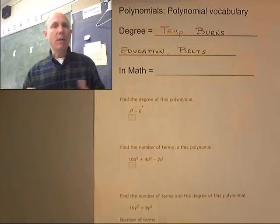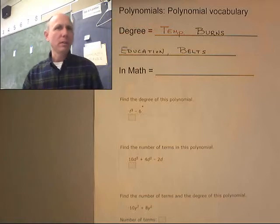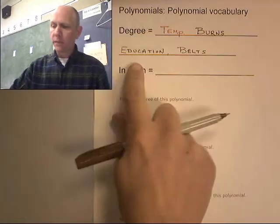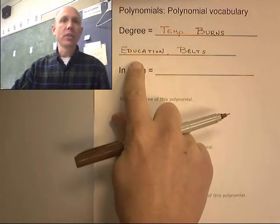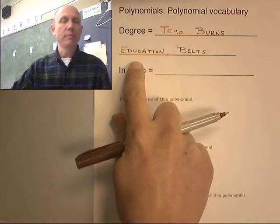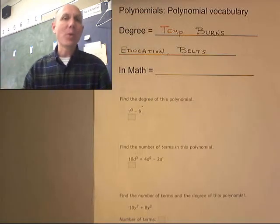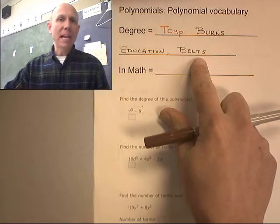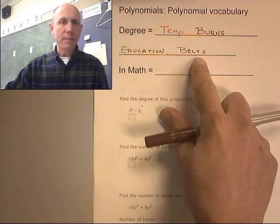So these tell us how kind of how powerful different things are. In education, I know that a master's degree is better than a bachelor's degree, or more powerful, required more education. A third degree black belt is better than a first degree black belt.